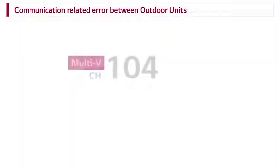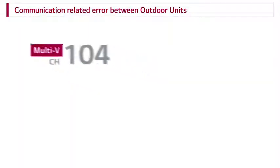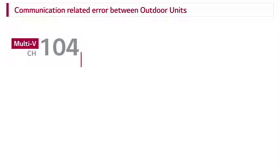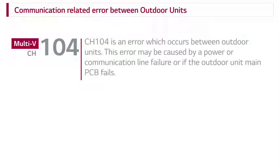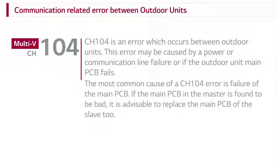Communication related error between outdoor units. CH-104 is an error which occurs between outdoor units. This error may be caused by a power or communication line failure, or if the outdoor unit main PCB fails. The most common cause of a CH-104 error is failure of the main PCB.